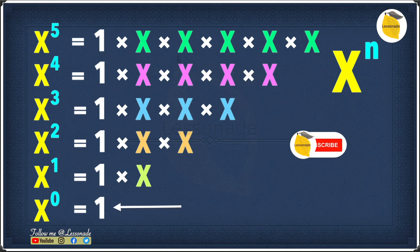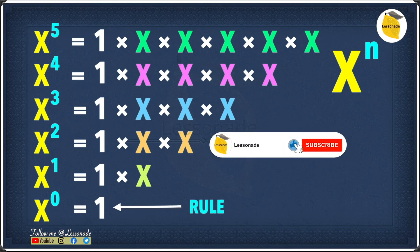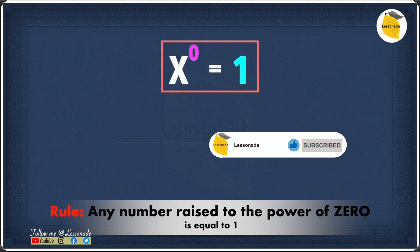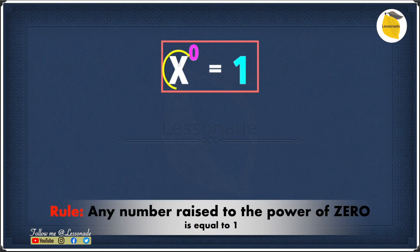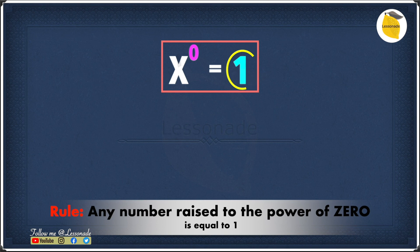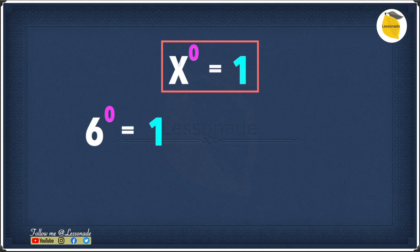This gives us another important rule: any number raised to the power of 0 is just 1. For example, 6 to the power of 0 equals 1, and 1.7 to the power of 0 also equals 1.